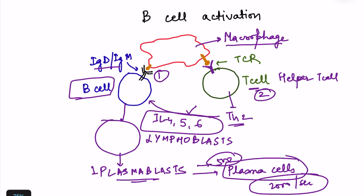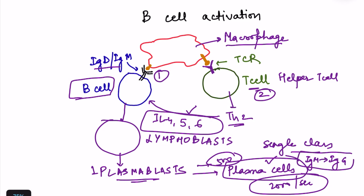Antibodies released by plasma cells are of single specificity — reacting to one particular antigen — and are of a single class. In the primary response, mainly IgM is secreted, but in the secondary response this switches to IgG. For the secondary response we need memory cells. Some lymphoblasts don't form plasma blasts; instead they form memory B cells, which go and sit throughout the lymph nodes of the body to enable a faster response on re-exposure.